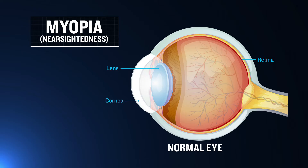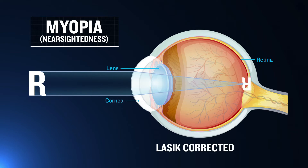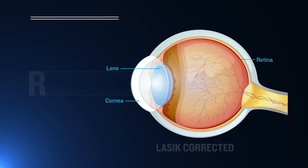Nearsightedness, or myopia, is the inability to see distant objects clearly. Light rays from distant objects converge in front of the retina so that they form a blurred image on the retina. During the LASIK procedure, central parts of the cornea are removed to flatten it, which reduces the amount that light bends.